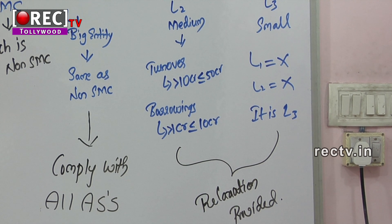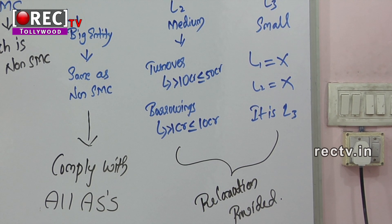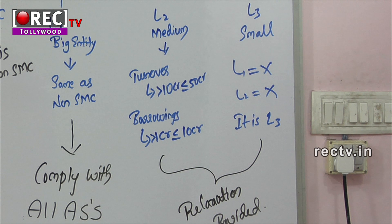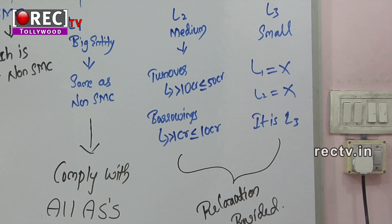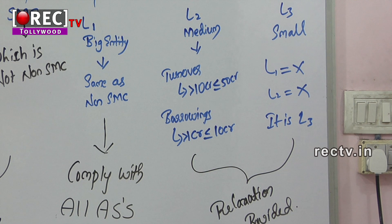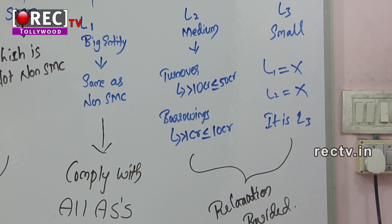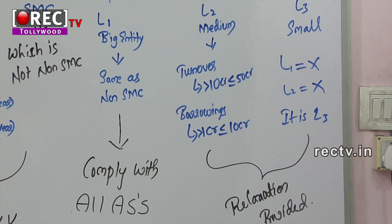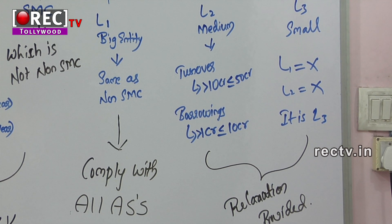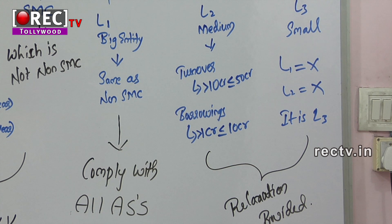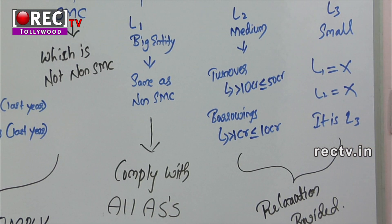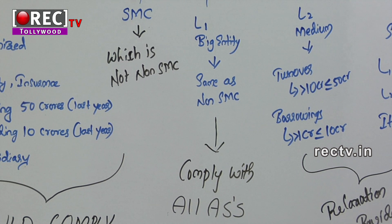If those conditions are satisfied, we call it an L2 or medium entity. L3 is an entity which is neither L1 nor L2 — it is a small entity. L2 and L3 entities have some relaxations when complying with accounting standards.